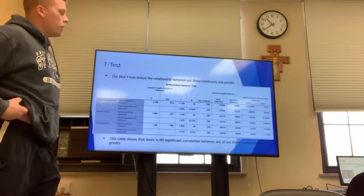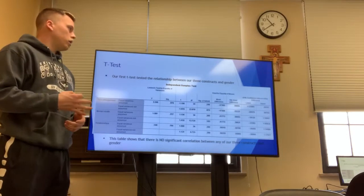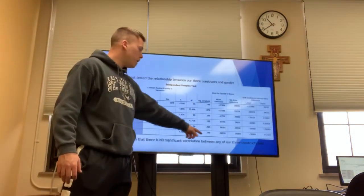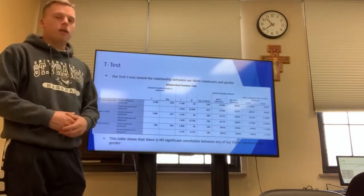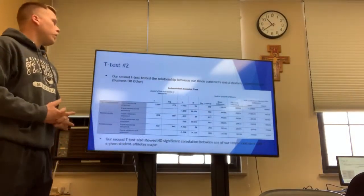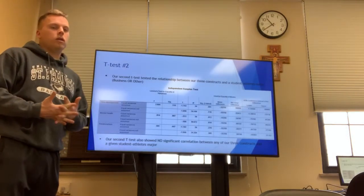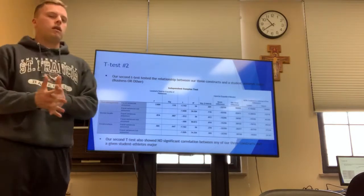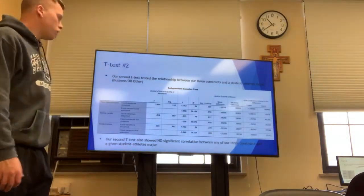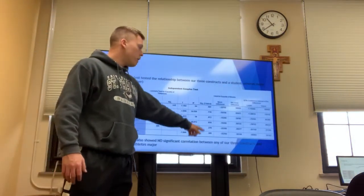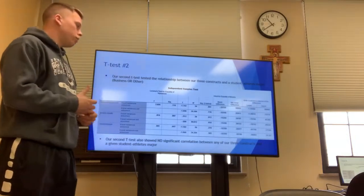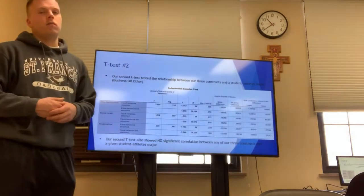Next is our first t-test, which tested the relationship between our three constructs — time management, mental health, and relationship quality — and gender. This table shows, by our significance figures, that there is no significant relationship between any of the three constructs and gender; all numbers are above 0.05. Our second t-test tested the relationship between our three constructs and a student athlete's major, categorized as business or other. Again, all significance figures are above 0.05, indicating no significant relationship between our three constructs and a student athlete's major.